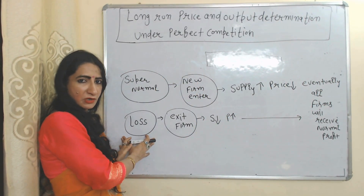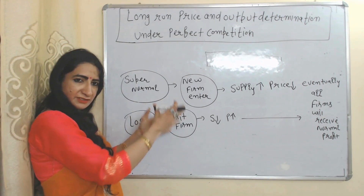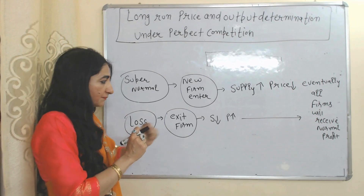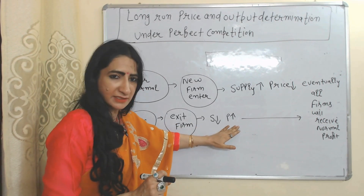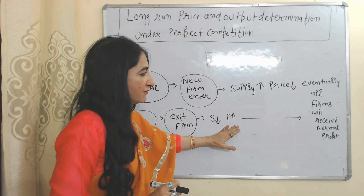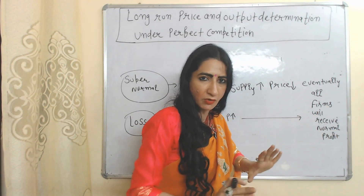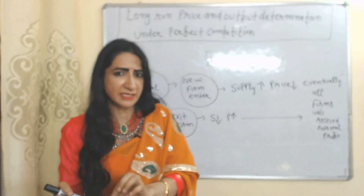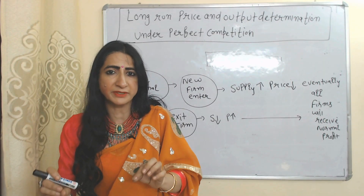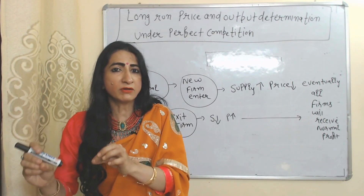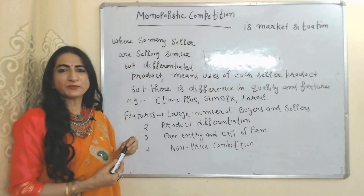Suppose during the short time period firms are receiving a loss — due to the loss, some firms will exit from the market during the long time period. As a result, supply falls and prices increase, eventually all firms will receive normal profit. So we can say that under perfect competition, during the long time period all firms will receive normal profit.